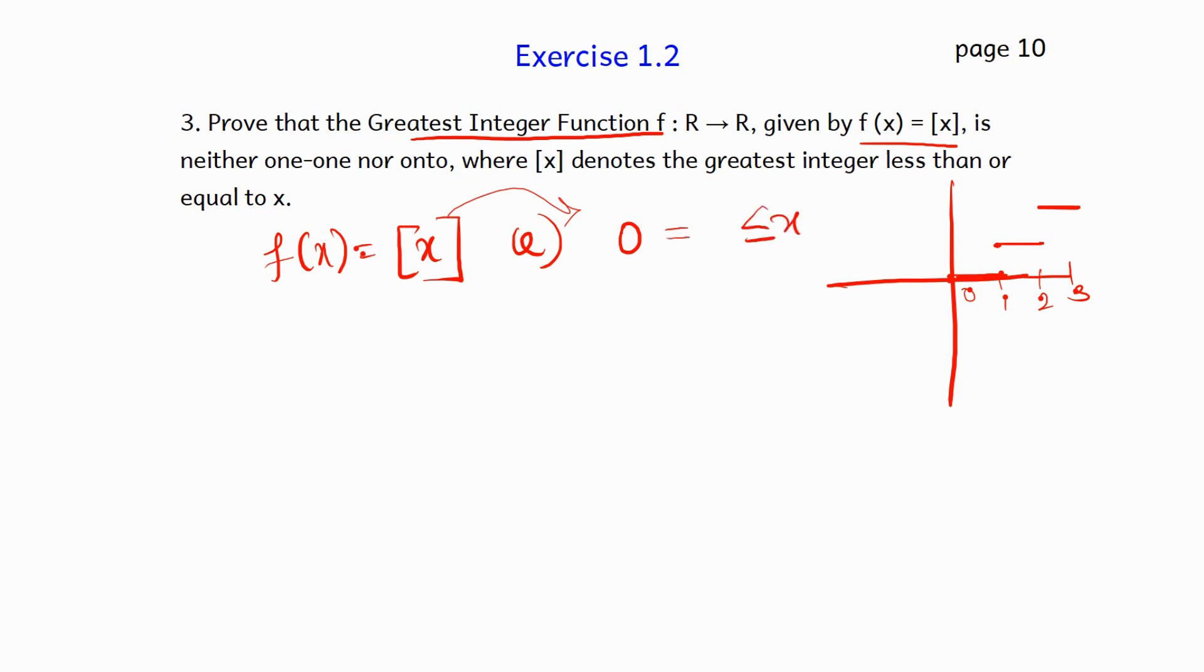f(x) will be equal to 0 for x greater than or equal to 0 and less than 1. It will be equal to 1 for x greater than or equal to 1 to 2. So like that, the greatest integer function is shown.